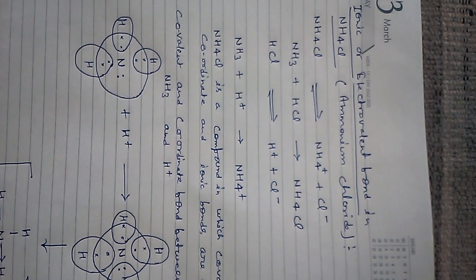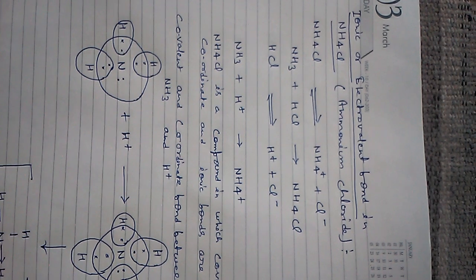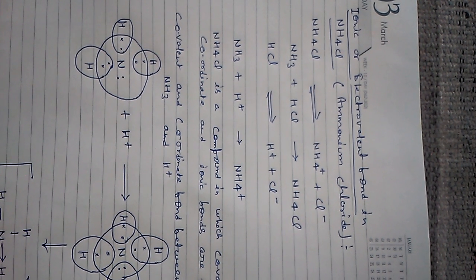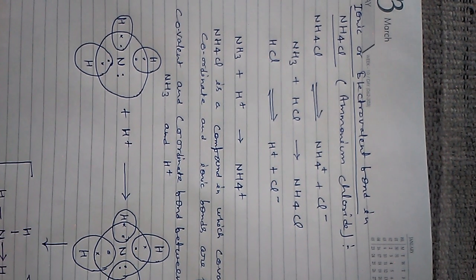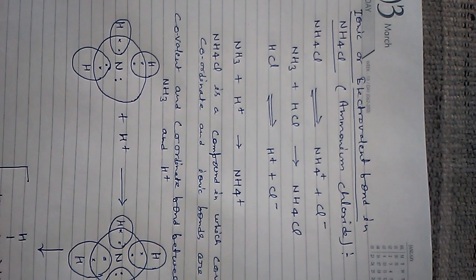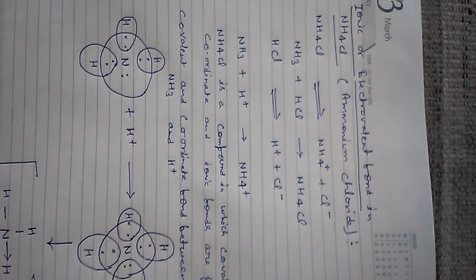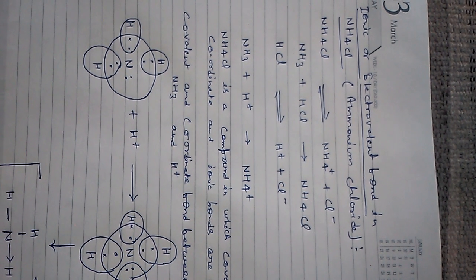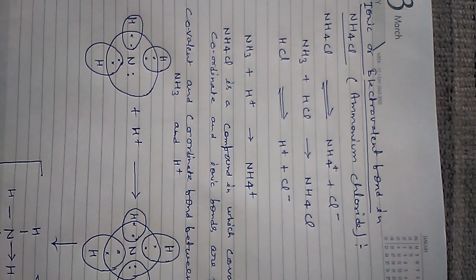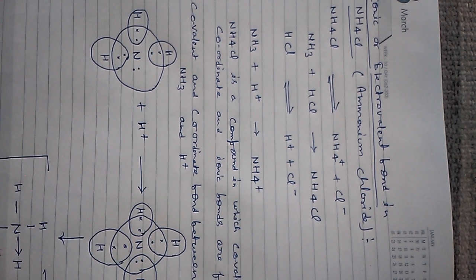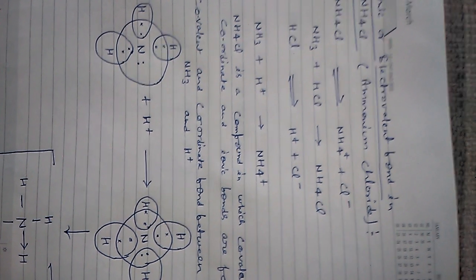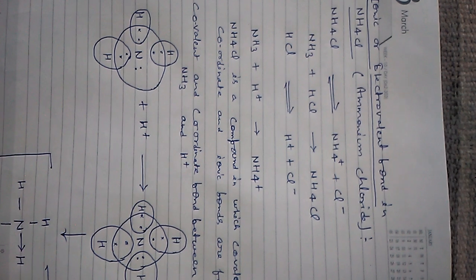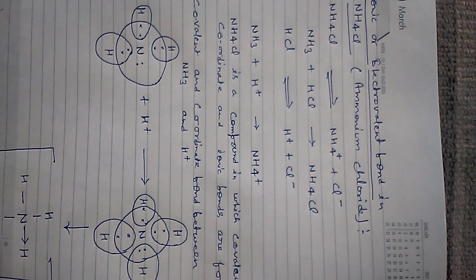Hello students, this is the next part of my video on ionic or electrovalent bond. Today we are going to discuss the formation of ionic or electrovalent bond in NH₄Cl. Ammonium chloride is one example in which covalent, coordinate, and ionic or electrovalent — all three types of bonds — are formed in one molecule. Therefore it is very important, and I am going to explain step by step how it is formed.